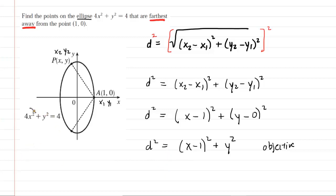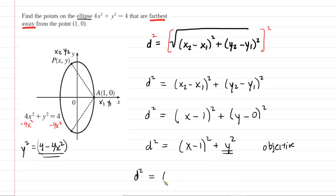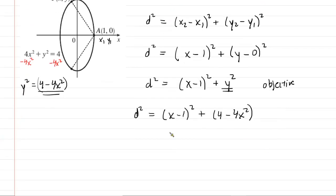We also need a constraint equation, and that is where the equation of the ellipse comes in. The points we are looking for are constrained to be on the ellipse. We solve the constraint for y squared by subtracting 4x squared from both sides, giving y squared equals 4 minus 4x squared. We substitute this into the objective function, making it in terms of just a single variable x.